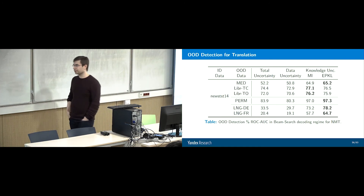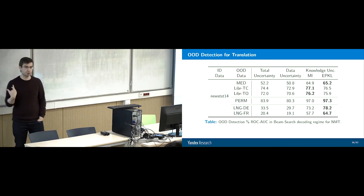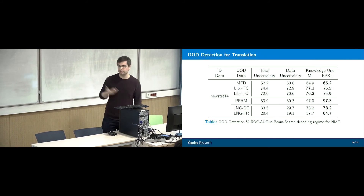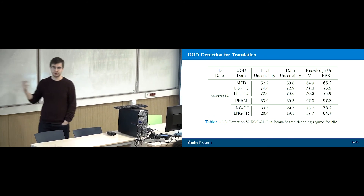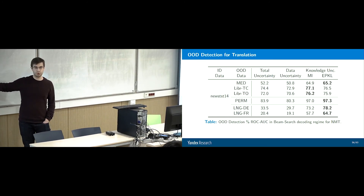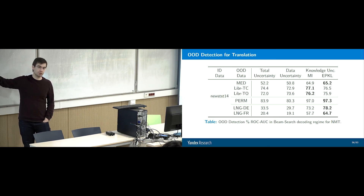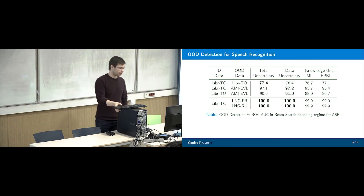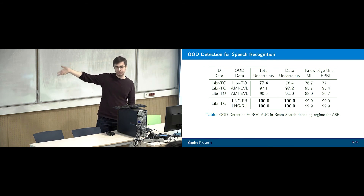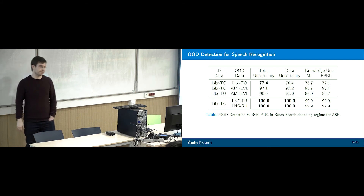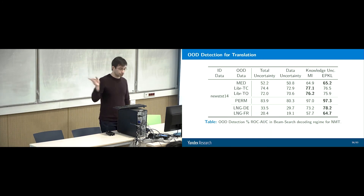This behavior does not occur in standard regression and classification models. This is an example of where things get really interesting when you go to structured data — you get more interesting effects. The benefits of decomposition of uncertainty are much bigger here. It's much more useful to decompose uncertainties for structured models, especially those with a high natural data uncertainty level like translation. Speech recognition, with much lower data uncertainty in the target, benefits less from decomposing uncertainties.